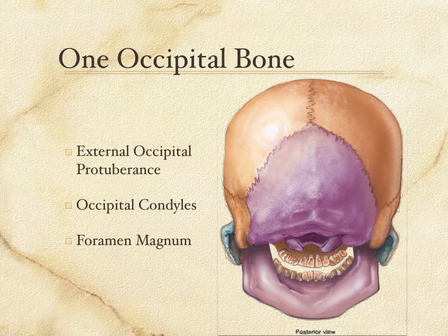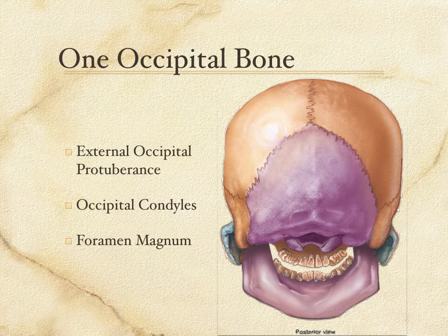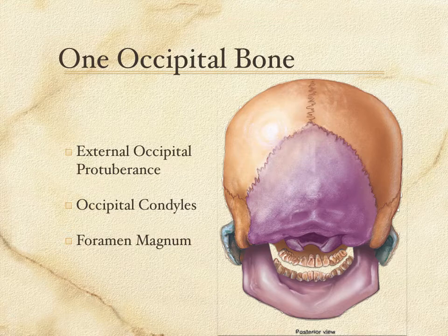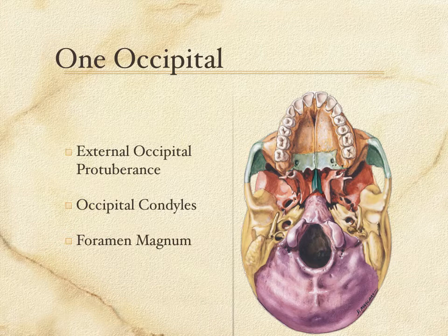On the inferior part of the occipital bone, you can see two occipital condyles — those two oval features on either side of the opening. They fit right down into the superior articular facets of the atlas, the first vertebra. Between those two occipital condyles is the foramen magnum — the opening where the brain and spinal cord are united. The spinal cord and the brain stem project through that hole. Looking at the skull from below, you can clearly see the foramen magnum in the center, with the occipital condyles on either side.